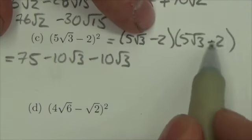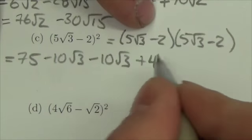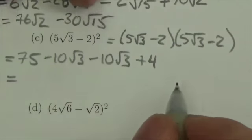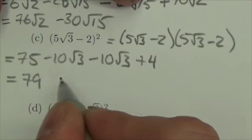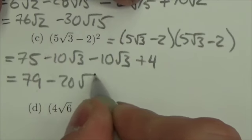And then finally, negative 2 times negative 2 is positive 4. Putting together like terms, we will get 79 minus 20 root 3.